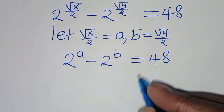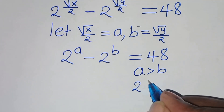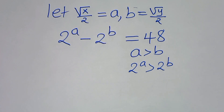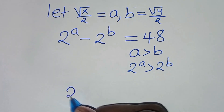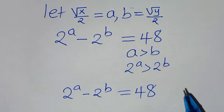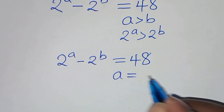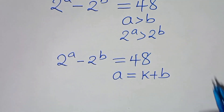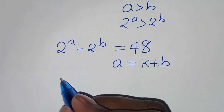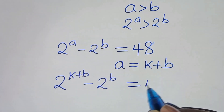From here, we have that a is greater than b, and that 2 to the power of a is also greater than 2 to the power of b. Therefore we have 2 to the power of a minus 2 to the power of b equals 48. From here, we can express a equal to k plus b.